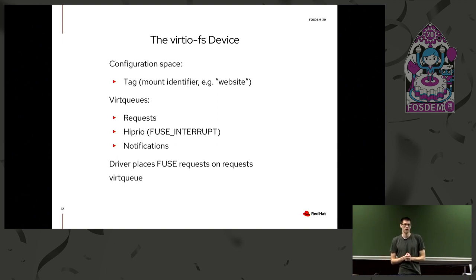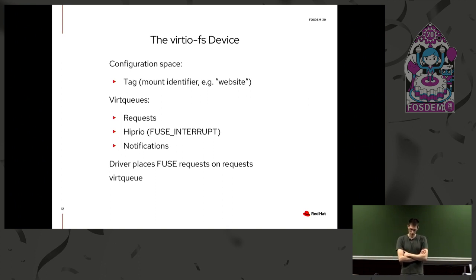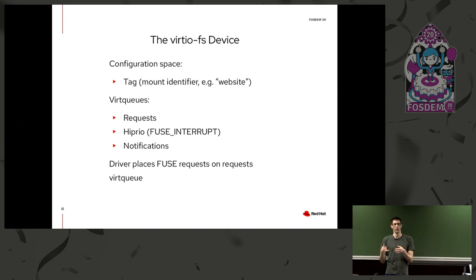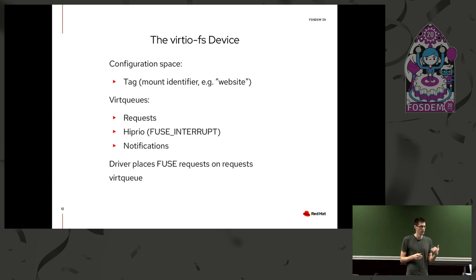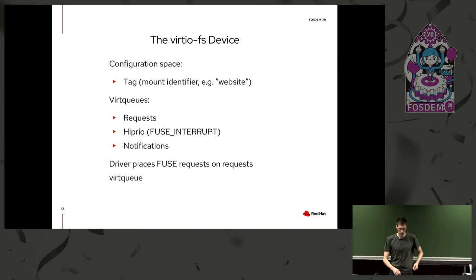A notifications queue handles server-initiated communication going in the opposite direction. In the VirtioFS device configuration space, there's a tag — the mount identifier or file system label — and that's how you can name your device. You can have 10 VirtFS devices attached to one virtual machine; the tag tells you which one is which file system.